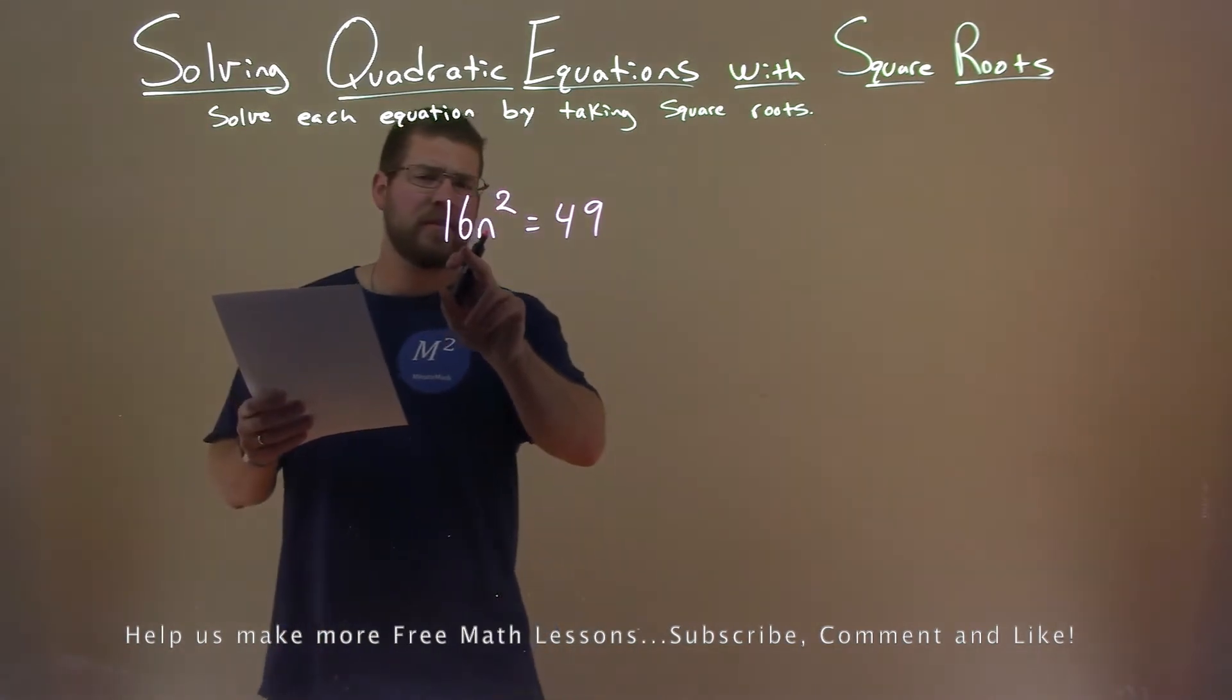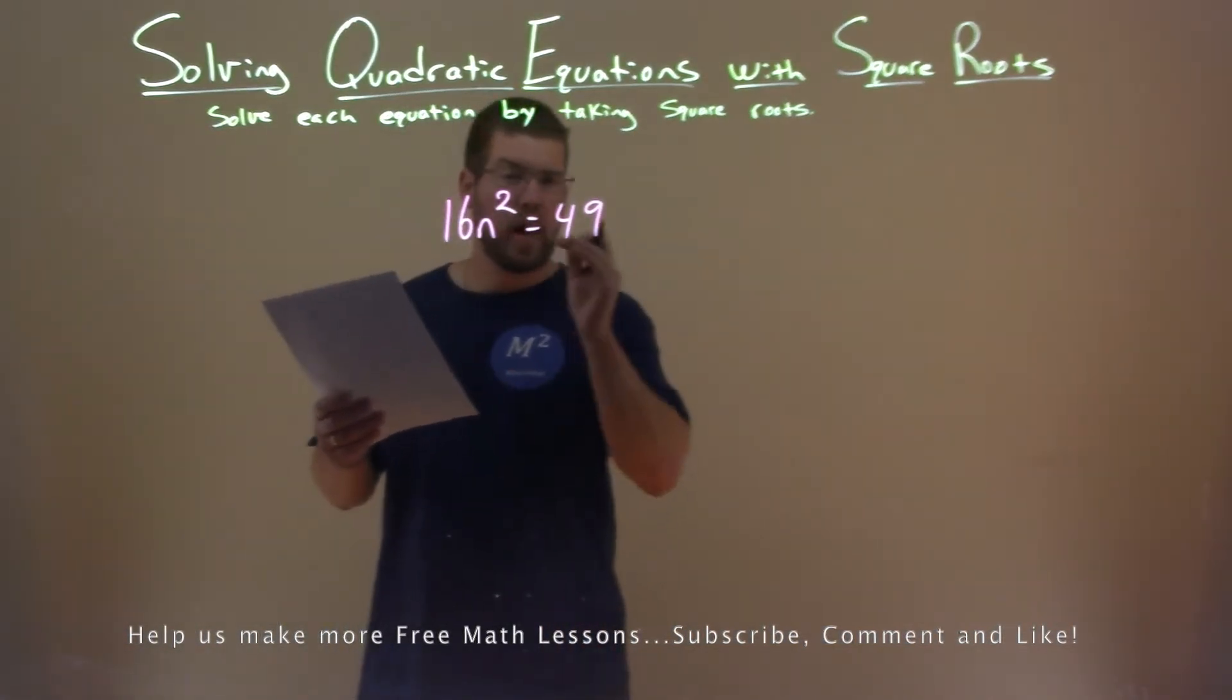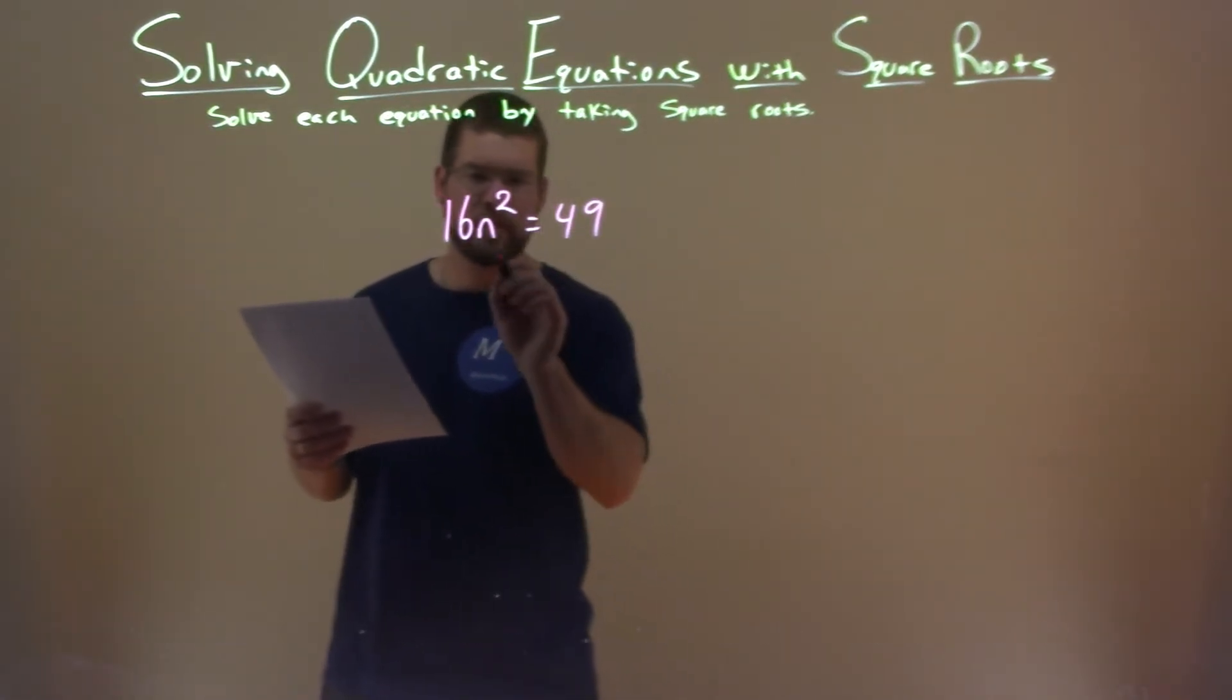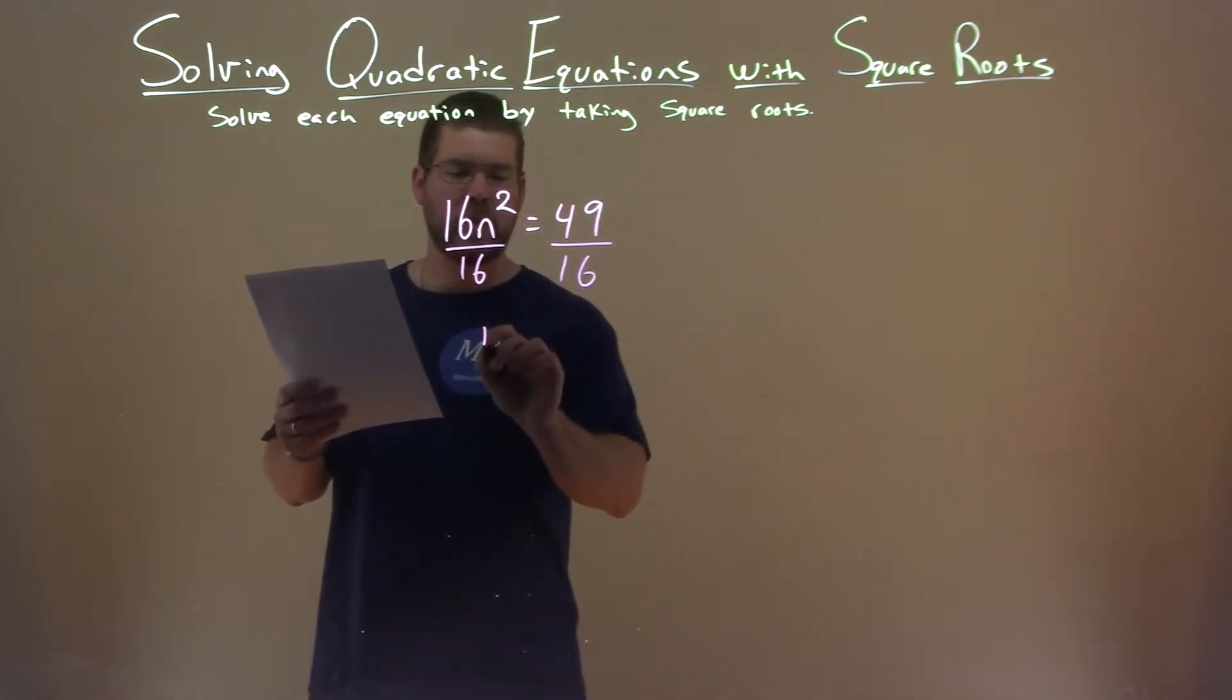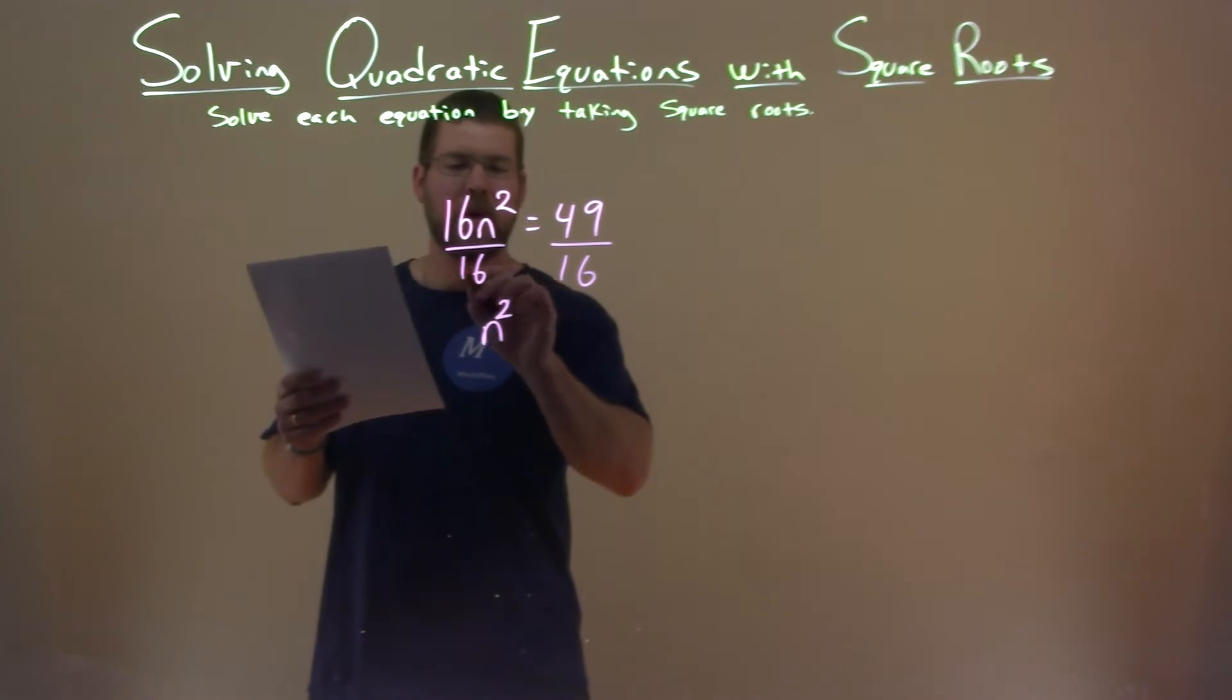Well, we have 16 times n squared. Opposite of multiplication, division. Divide 16 to both sides, and that helps us bring n squared by itself.